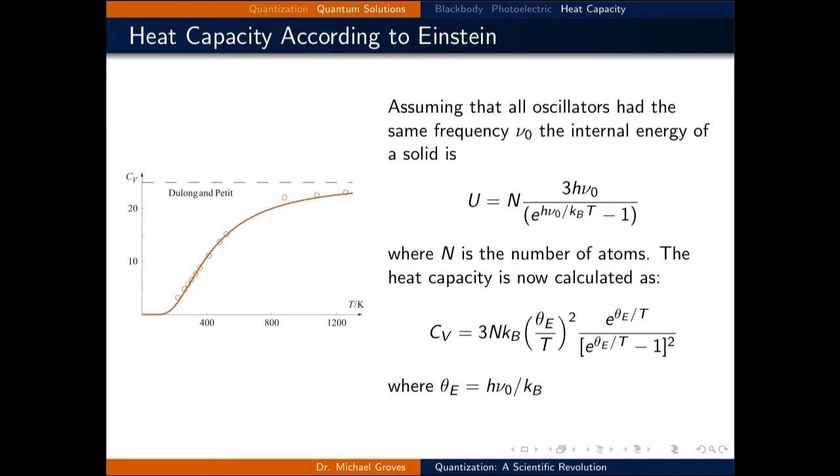Assuming that all oscillators had the same frequency ν₀, the internal energy of a solid is calculated as N times 3hν₀ divided by e^(hν₀/kBT) - 1, where N is the number of atoms.